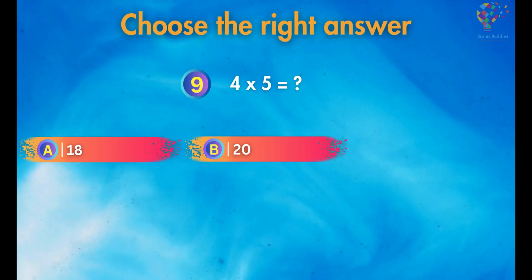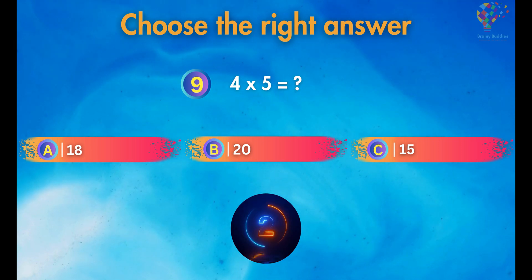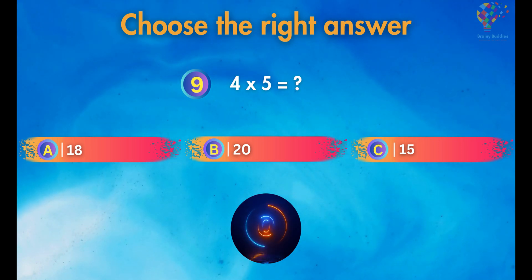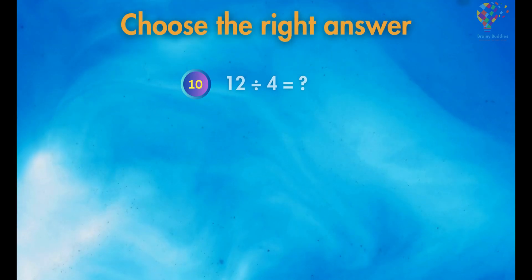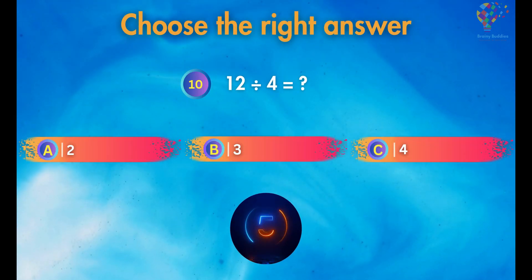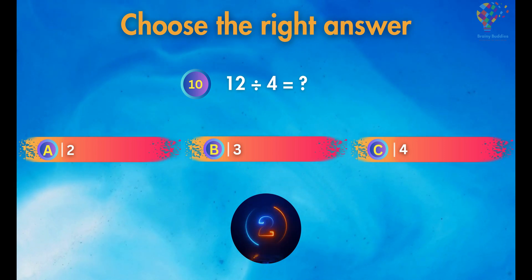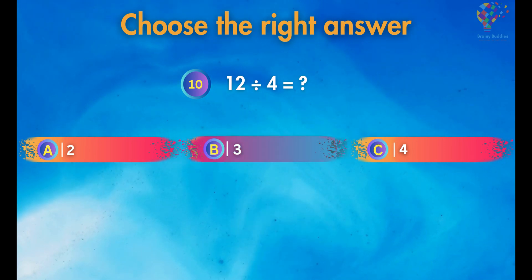4 times 5 is equal to 20. 12 divided by 4 equals 3.